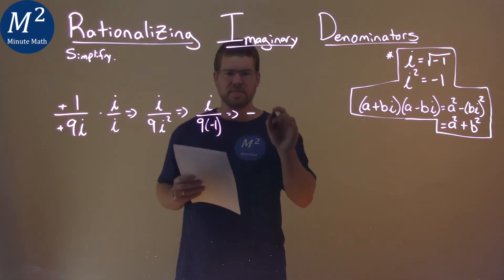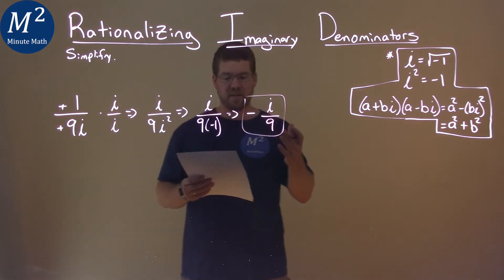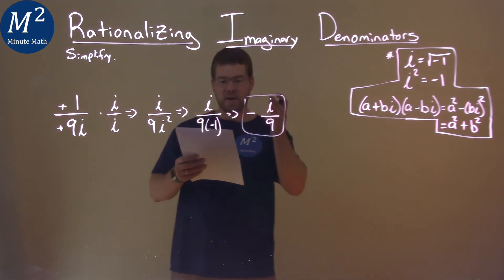Put the negative out front, put the i up here, 9 down here, and there we have it. That's it. Our final answer is negative i over 9.